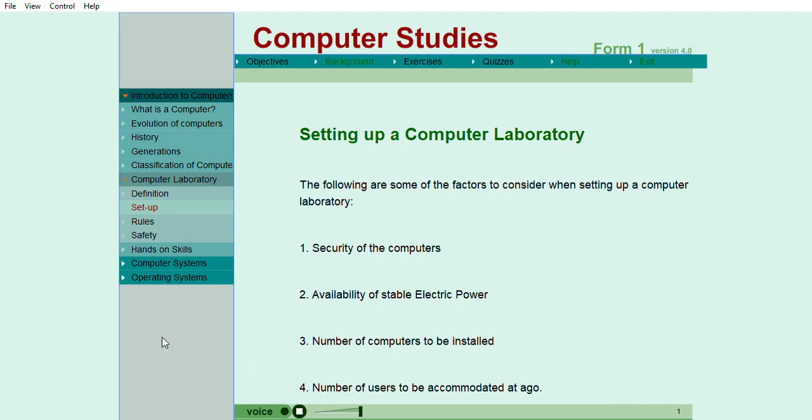There are various factors that should be considered when setting up a computer lab. One of them is security. Security is a very important factor because the lab should be located where the computers are safe against theft. Secondly, computers use electric power and therefore availability of power should be considered. Thirdly, the number of computers to be installed and the number of people to occupy the laboratory should be considered so that the room does not look congested or small when it is finally set up.